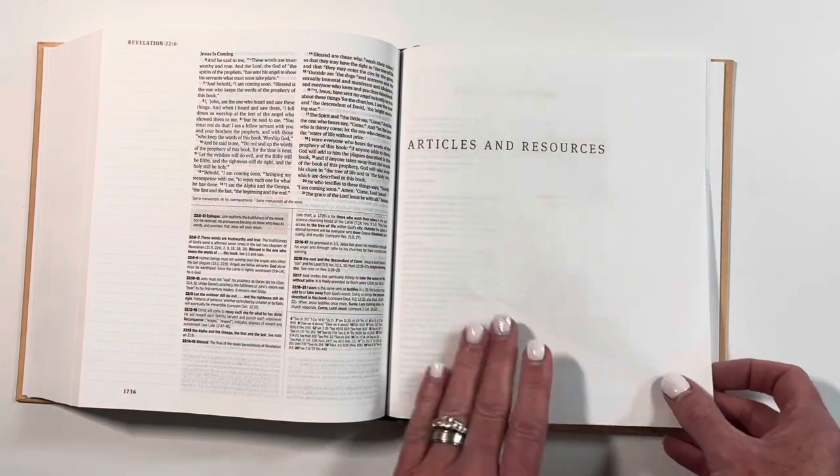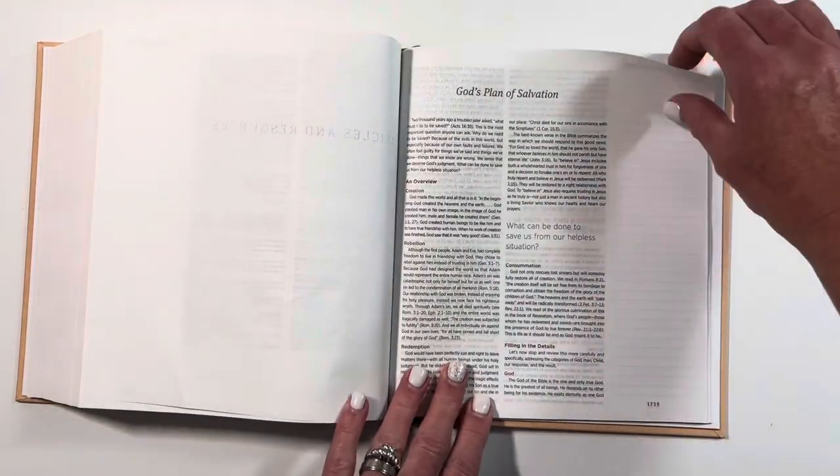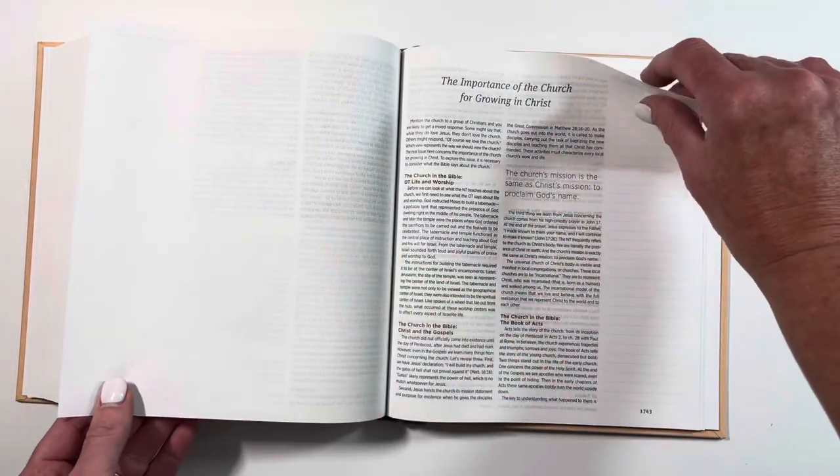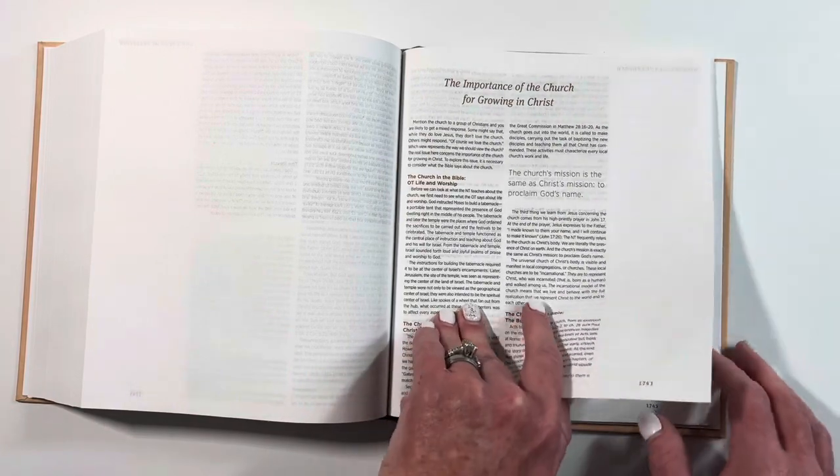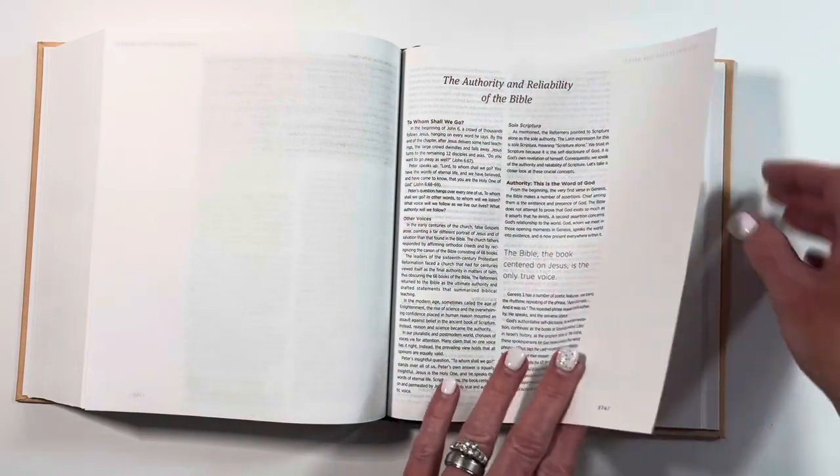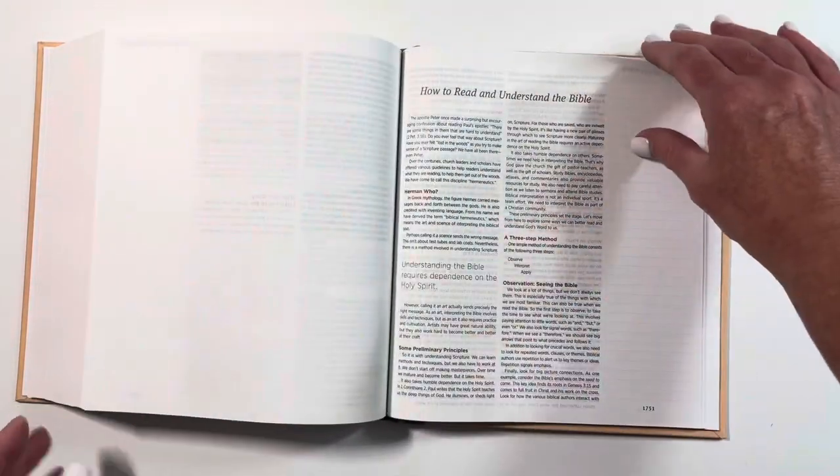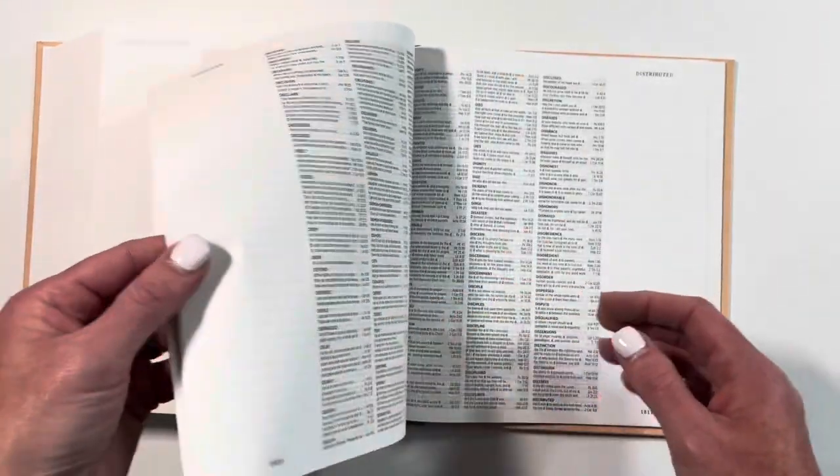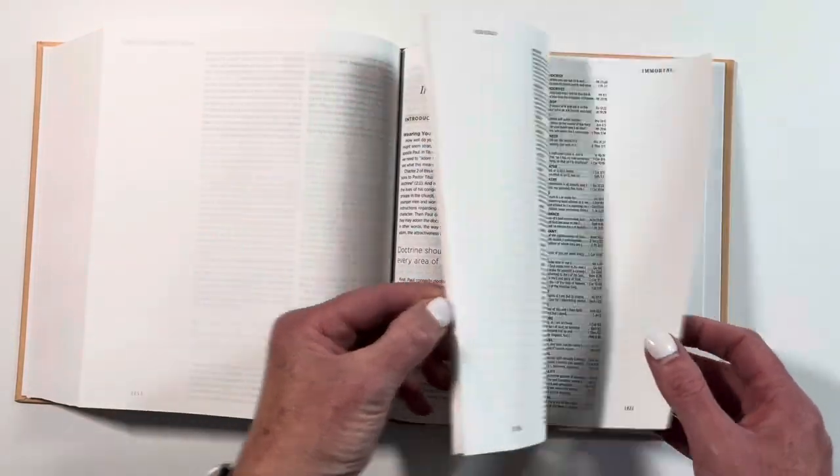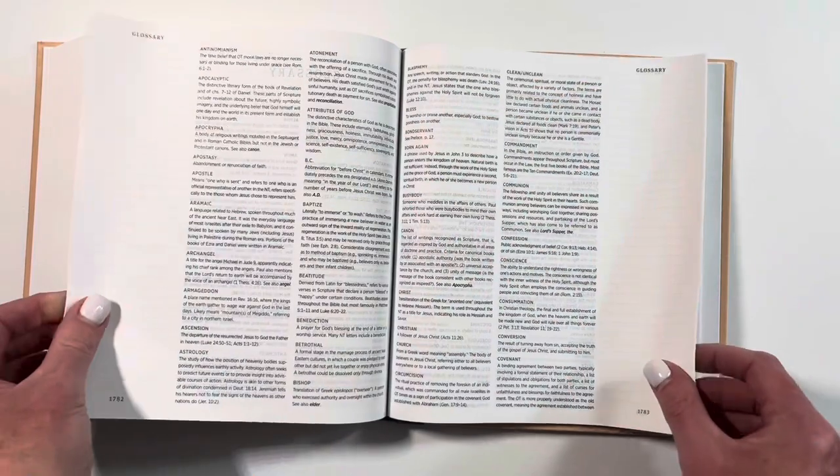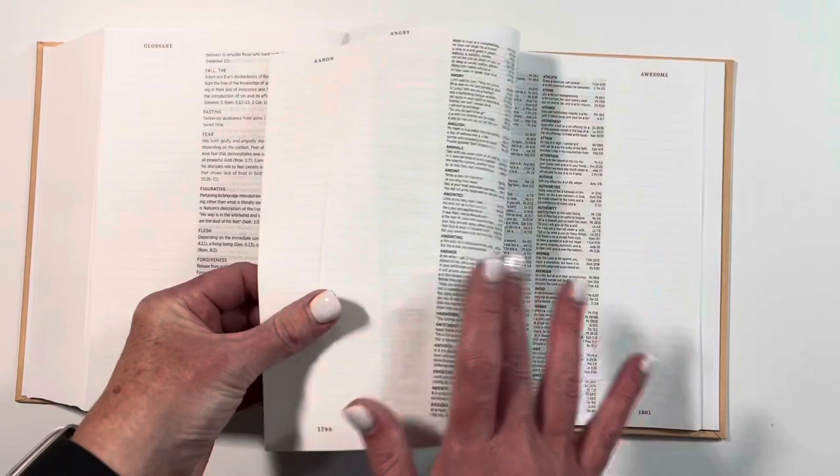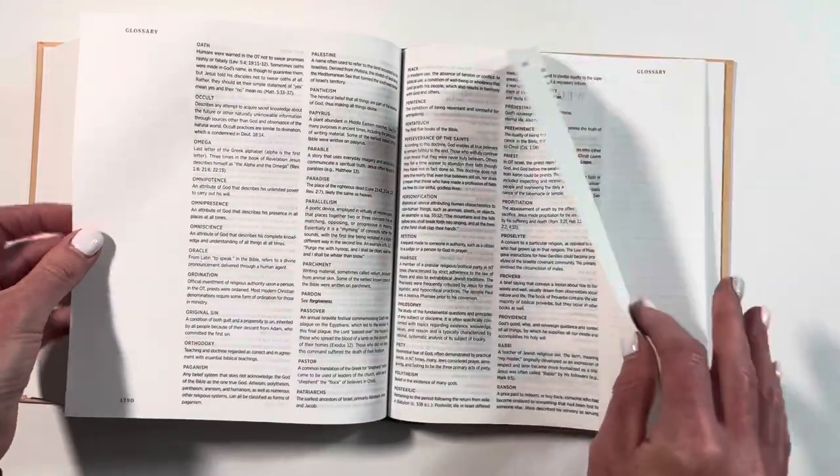So but I really, really do love this Bible. I love the color theme of it. So we have some articles and resources here in the back. God's plan of salvation, telling you how to be saved, how to tell others to be saved, the importance of the church for growing in Christ, the authority and reliability of the Bible, how to read and understand the Bible. So those are all amazing topics. So we have these little, this is our index probably, yeah.